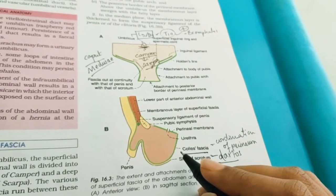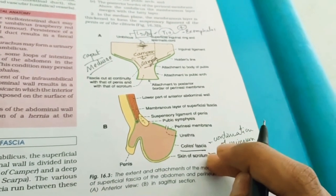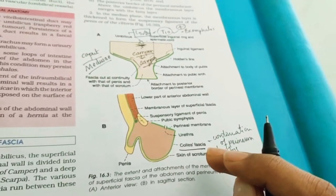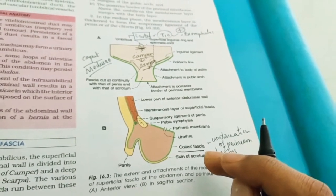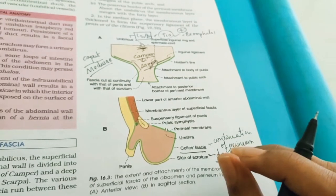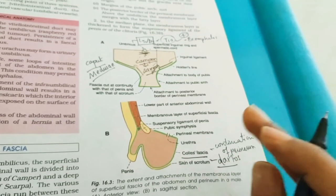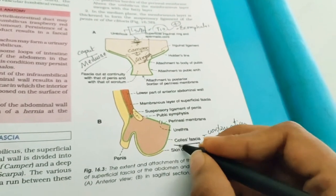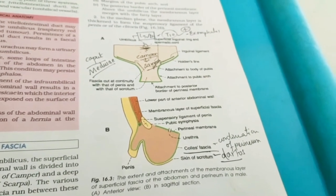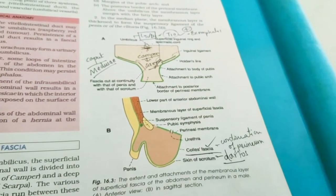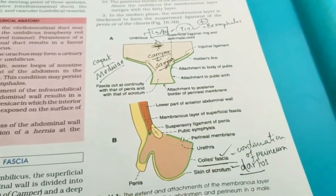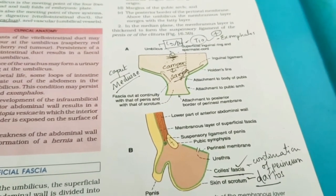Colles' fascia acts as a protection — it prevents extravasated urine from entering the ischiorectal fossa and the thigh whenever the urethra is ruptured. Urine may flow, but because of Colles' fascia it does not enter the thigh or ischiorectal fossa. So Colles' fascia, which is the continuation of the perineal superficial fascia, serves as a safeguard.